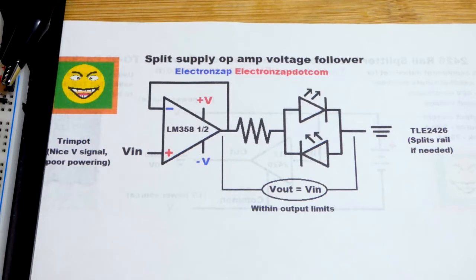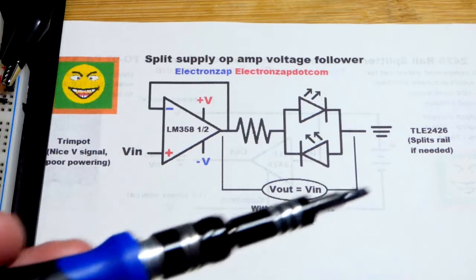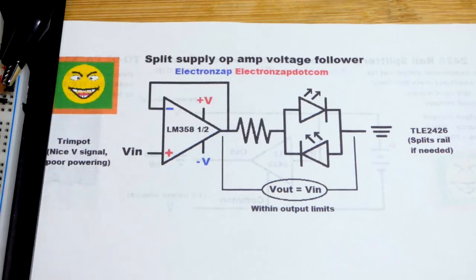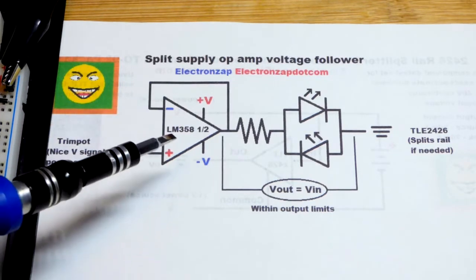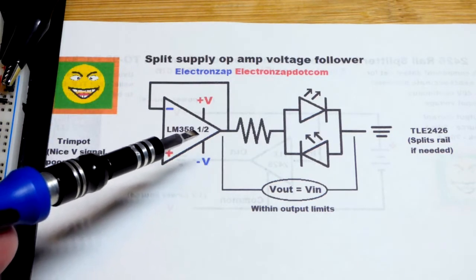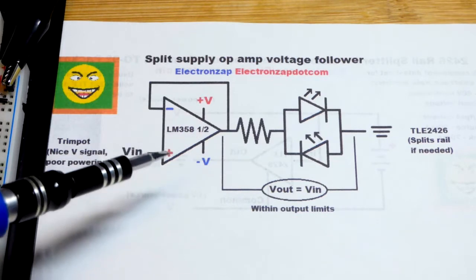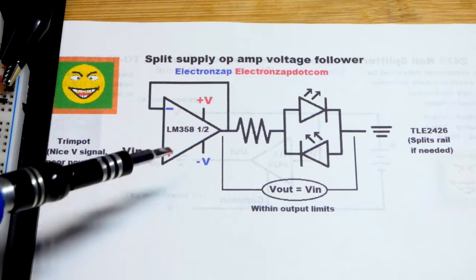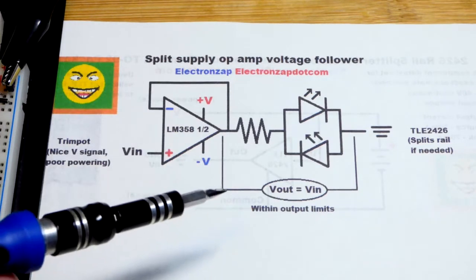We'll talk about that a little bit coming up but I don't have a dual or split power supply, we're going to make it a split supply version. The LM358 is a single supply op amp but it will work with split supply as well so it's both single and split.